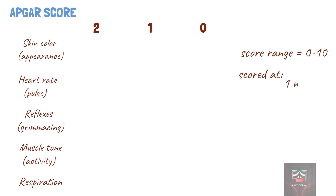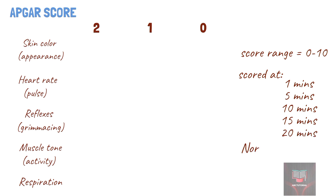The score is reported at 1 minute and 5 minutes after birth for all infants, and at 5-minute intervals thereafter until 20 minutes. Scores ranging from 7 to 10 are considered normal. If the 5-minute APGAR score is abnormal — that is, less than 7 — appropriate measures should be taken and the APGAR score will be reassigned until the infant is stabilized.